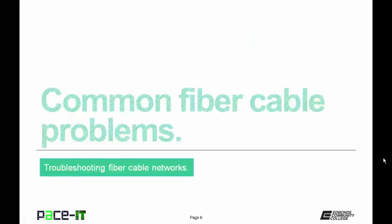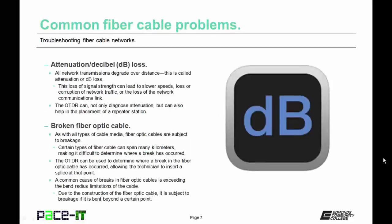So let's talk about some common fiber cable problems. We're going to begin by talking about attenuation or decibel loss. All network transmissions degrade over distance — this is called attenuation or decibel loss. This loss of signal strength can lead to slower speeds, loss or corruption of network traffic, or the loss of the network communication link. The OTDR can not only diagnose attenuation, but it can also help in the placement of a repeater station.